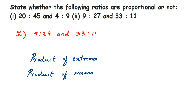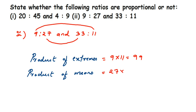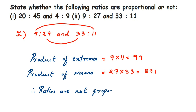The second question has ratios 9 is to 27 and 33 is to 11. Product of extremes: 9 × 11 = 99. Product of means: 27 × 33 = 891. Since 99 and 891 are not equal, the ratios are not proportional. You can also verify by reducing to lowest form. I hope this is clear — if you have any further questions or doubts, you can drop a comment. Thank you so much for watching.